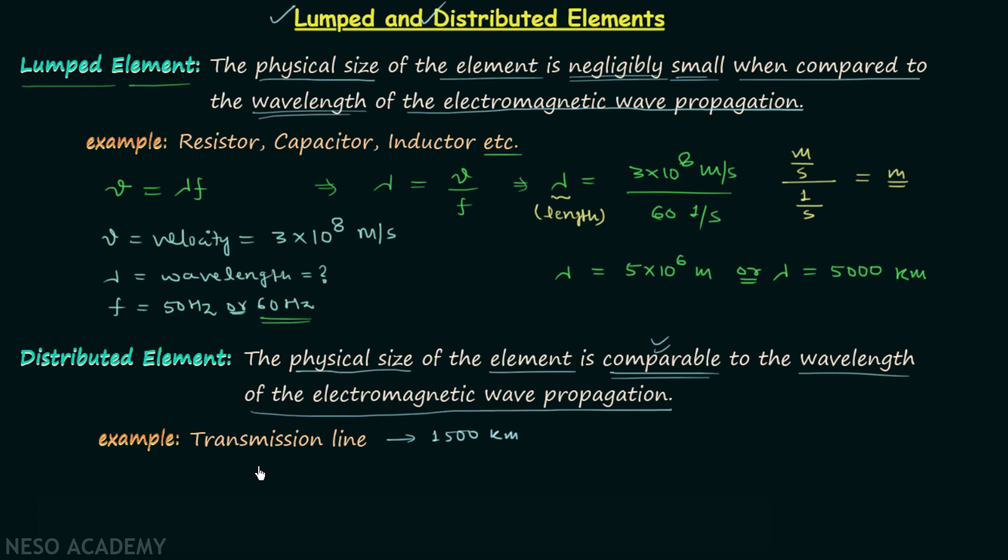They are comparable, and hence transmission line is an example of distributed element. Therefore, the resistance, capacitance, and inductance is distributed throughout the line.